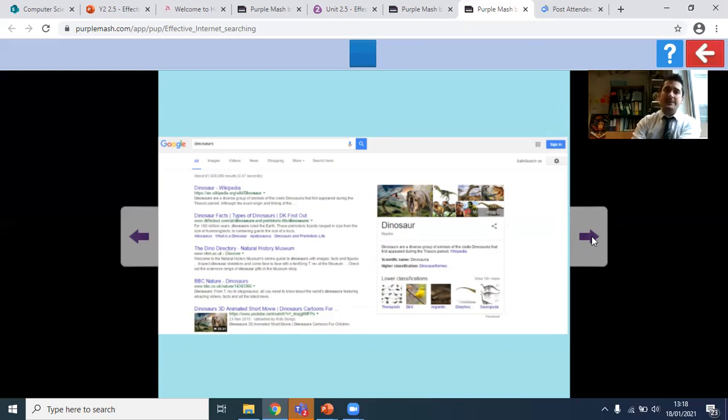Now, it's really important as part of our eSafety to remember that when we search things on the internet, we don't necessarily know what information we'll find. We need to make sure that you are finding facts and you are not finding things that are untrue. Not every webpage you find out there will be accurate information. So it's always good to use very safe websites such as the BBC website. For example here, the dinosaur page on Wikipedia comes up, as does the Dino Directory for the Natural History Museum and Dinosaur Facts from DK Find Out.